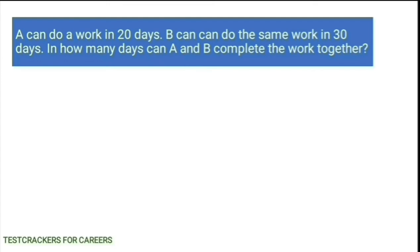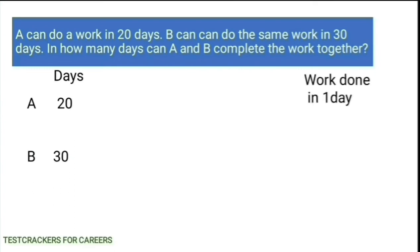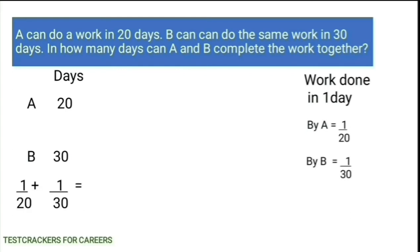A can do a work in 20 days and B can do the same work in 30 days. We have to find out in how many days A and B can complete the work together. Work done in 1 day by A is 1 by 20 and by B is 1 by 30. Adding the work done in 1 day by A and B, that is 1 by 20 plus 1 by 30, we get the work done by A and B in 1 day, which is equal to 1 by 12.